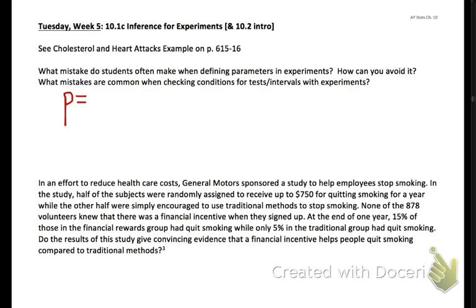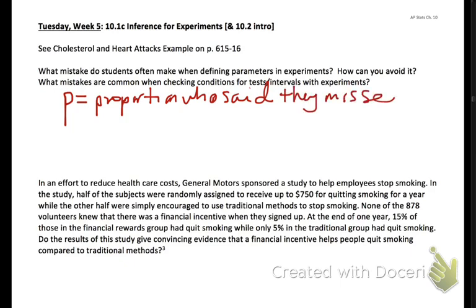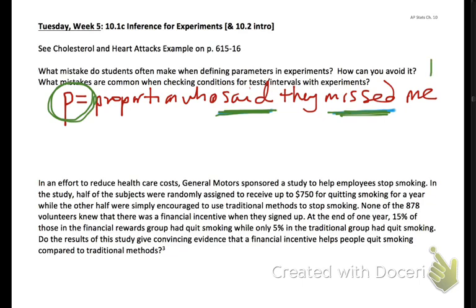The most common mistake students make when defining parameters: they would say something like, let p equal the proportion who said they missed me. The problem here is this past tense — 'those who said they missed me.' Remember, a parameter is about an unknown population characteristic. When you use past tense like 'those who said' or 'those who missed me,' it sounds like it's referring to the sample, which would be referring to p-hat. We want our parameters to refer to the unknown population.